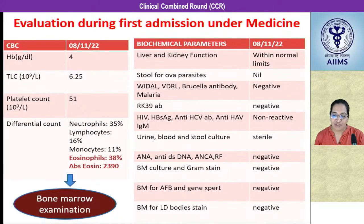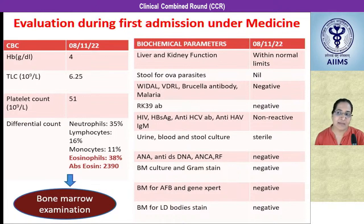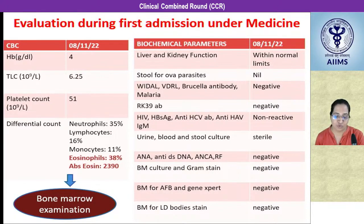During evaluation in his first admission under the Department of Medicine, his CBC revealed bicytopenia. He had severe anemia with hemoglobin of 4. He had thrombocytopenia with 51,000 platelet count. Striking was the differential count showing 38% eosinophils and an absolute eosinophil count of more than 2,000. An extensive workup was done including stool examination, autoimmune workup, and a battery of tests to rule out infective causes, all of which turned out to be negative.